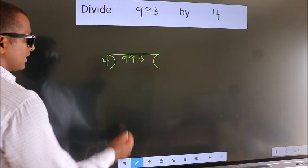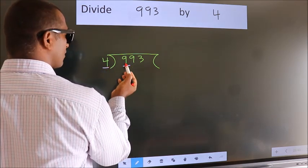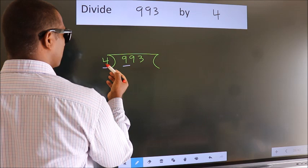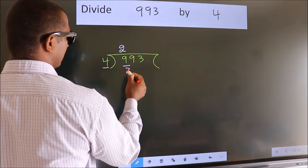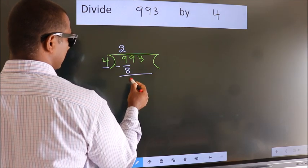Next. Here we have 9, here 4. A number close to 9 in 4 table is 4 twos, 8. Now we should subtract, we get 1.